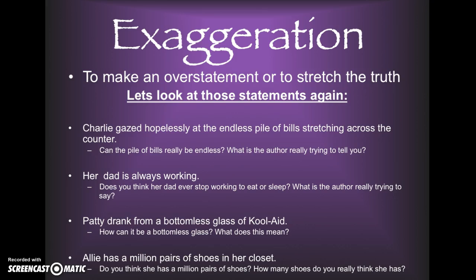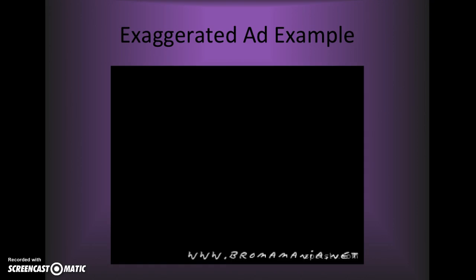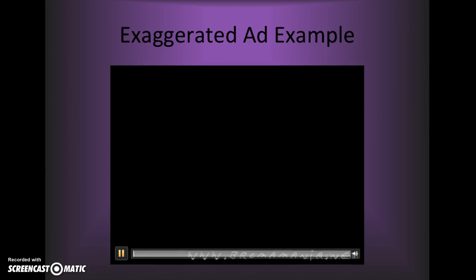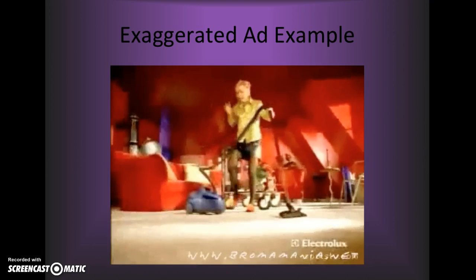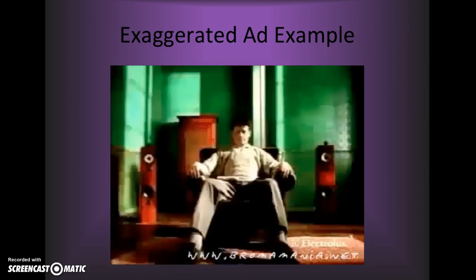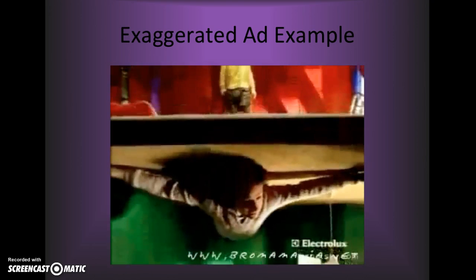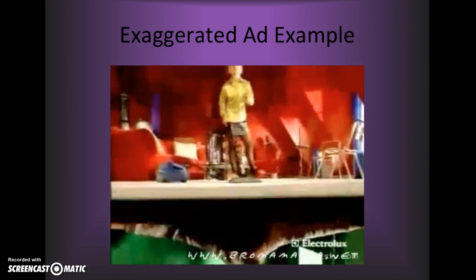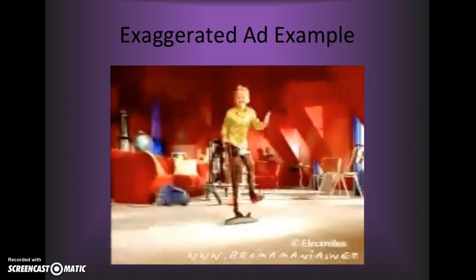How can it be a bottomless glass? What does that mean? And Allie has a million pairs of shoes in her closet. Do you think she really has a million pairs of shoes? How many shoes do you think she actually has?